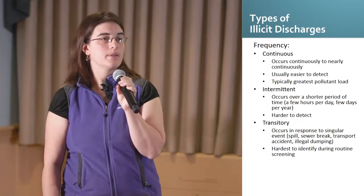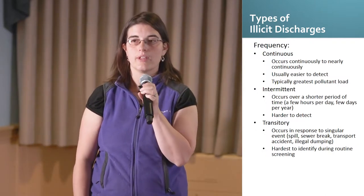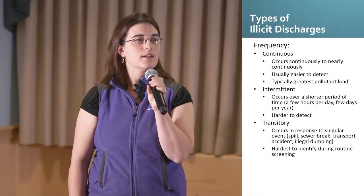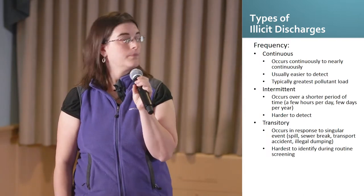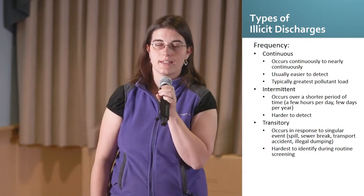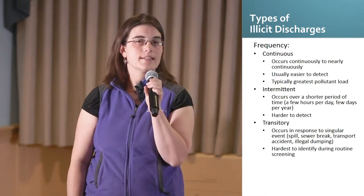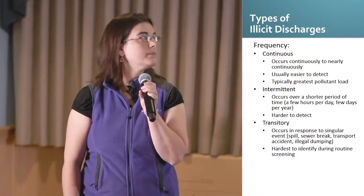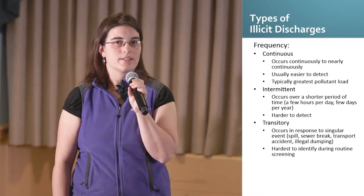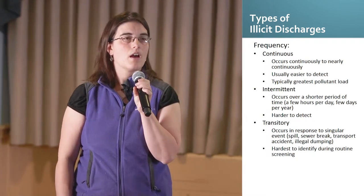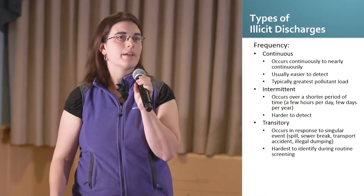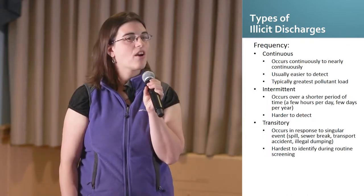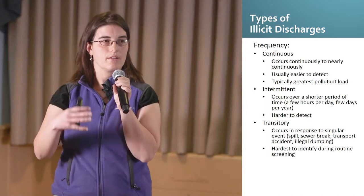Illicit discharges can be described by their frequency — either continuous, intermittent, or transitory. Continuous illicit discharges, such as a cross connection, occur continuously or nearly continuously. They're usually the easiest to detect because they're running almost continuously, and they typically generate the greatest pollutant load. Intermittent discharges, like a sump pump, occur over a period of time — maybe a few hours a day or a few days per year — and they are harder to detect because they're not running continuously.